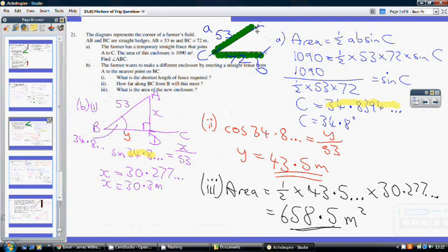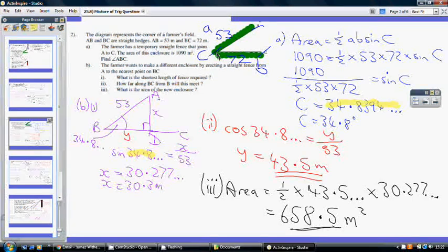So, first of all, do a little sketch to, oh no, I think they gave you the sketch, didn't they? They gave you the little sketch. So we've got, we know that AB is 53 metres, and BC is 72 metres, and we know that the area of the triangle ABC is 1090. We're being asked to find this angle here, this angle from A to B to C.